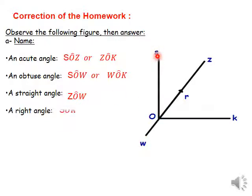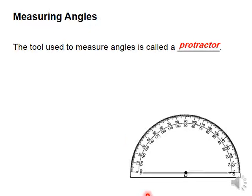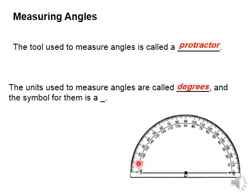Now we are going to talk about the measure of an angle. We measure the size of an angle using degrees — we use this small circle symbol called degrees. Here are some measures of different angles. We use the protractor to measure the angle. This is called the protractor; the unit used is degrees, symbolized by a small circle.